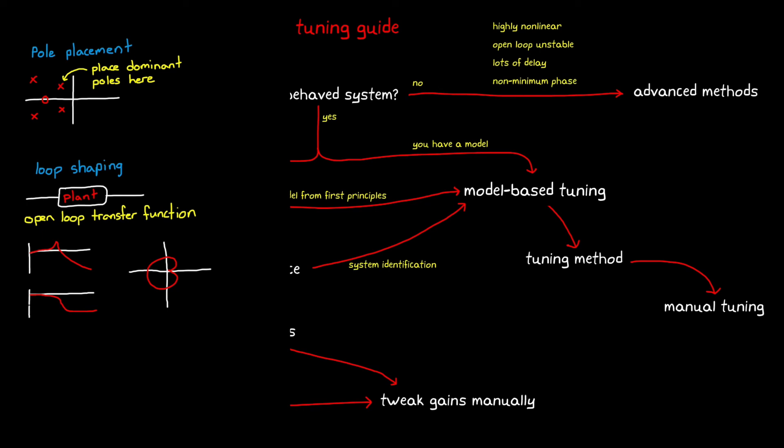Finally, if you choose to, you can abandon the reliance on intimate knowledge of control theory and instead rely on the people and the methods that have come before you by once again using heuristic methods. Ziegler-Nichols and Cohen-Kuhn methods can be used with a simulation of our systems to get an initial gain set.